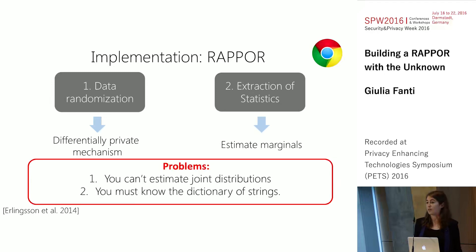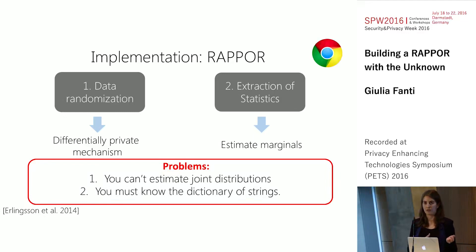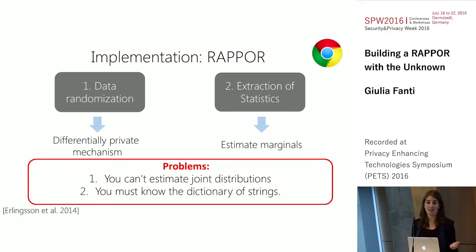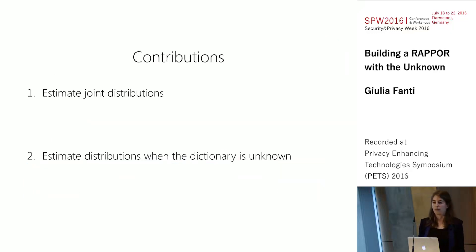There are two main problems with RAPPOR in its current state. The first problem is that you can't estimate joint distributions. For example, if I want to learn the joint distribution of users' homepages and also the plugins that they have installed, the current decoding mechanism just doesn't work — it gives you the wrong distribution. This is problematic because oftentimes it's the co-occurrence of data that is indicative of something interesting, like the emergence of malware. The second problem is that in order for the current decoding mechanism to work, you have to know the underlying dictionary of possible strings. If I'm trying to learn a distribution of plugins, I need a list of every possible plugin that could be in the dataset, which is challenging because these datasets are changing over time as people build new plugins.